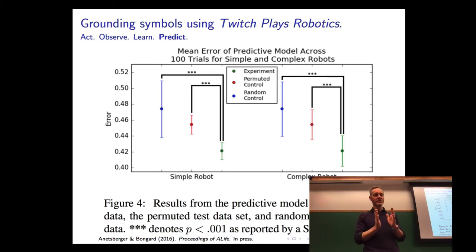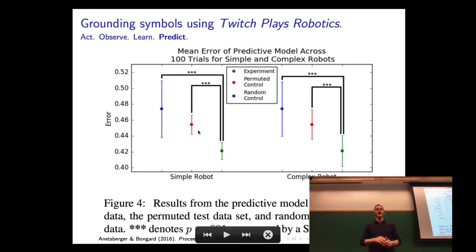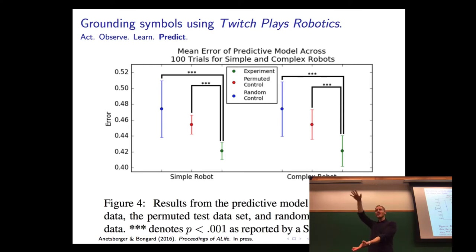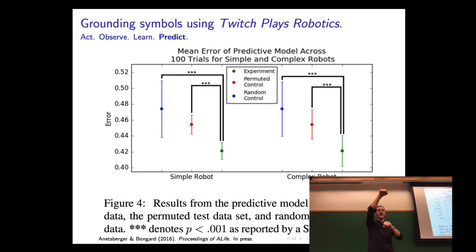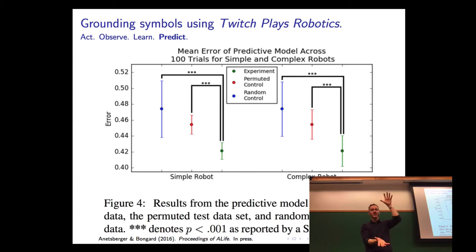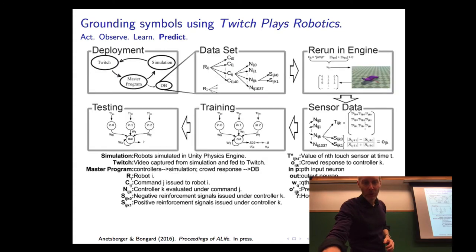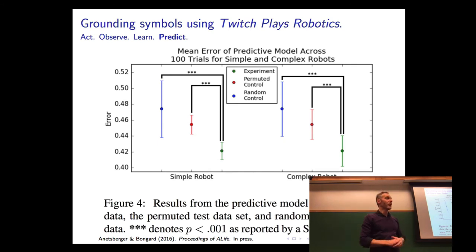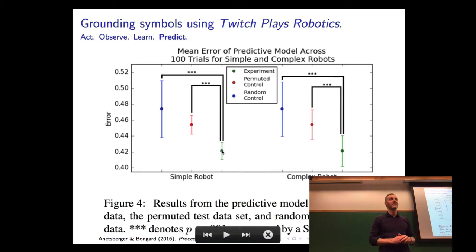We compared this against controls. The permuted control (shown in red): we took all the O values from the worm and legged robot controllers and permuted them — swapped the O from controller i with controller j — so we had the same set of O's but they were no longer associated with the controllers that gave rise to them. When we do training and testing again, those networks are significantly worse at predicting social response — their error is higher than in the actual experiment. This shows that the green result actually reflects real predictability.